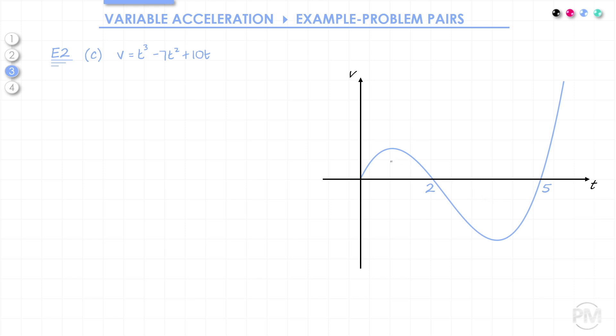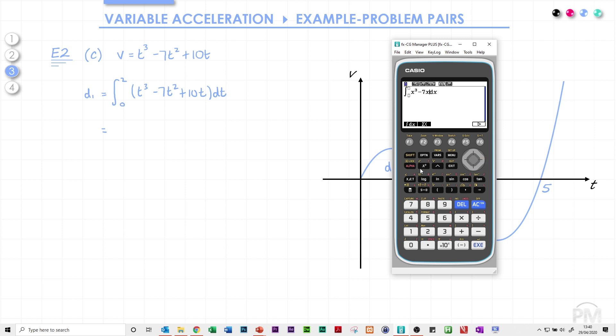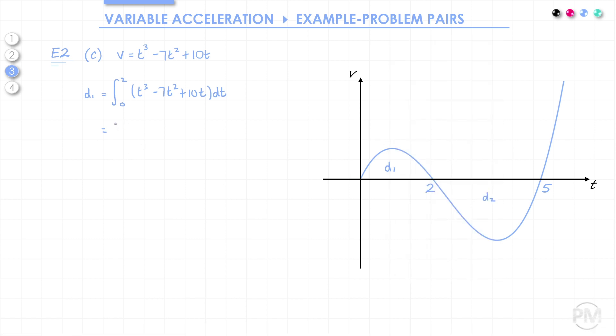So in order to find the distance, we don't want that to happen. I'm going to label the two regions D1 and D2, distance 1 and distance 2. If we want to find the total distance, we want to find the total area under the graph. So we need to do two separate integrals. The first distance, we're going to integrate between 2 and 0, and that will already be positive. So the distance travelled between 0 and 2 is 16 thirds.